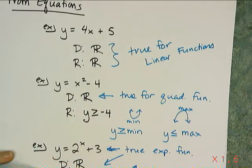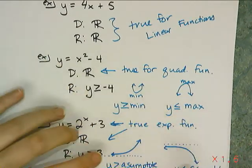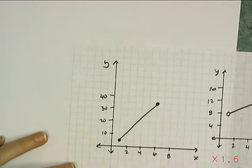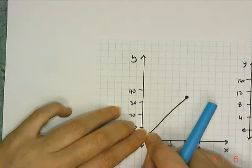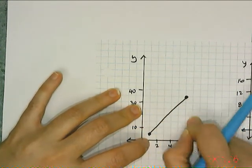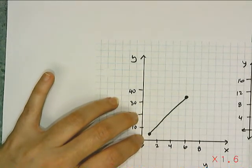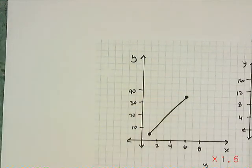Now let's look at how to find domain and range from graphs — not the infinite graphs with arrows, but pieces of graphs, like line segments. All you have to do is remember that domain covers all the x values and range covers all the y values. You look at your scale and figure out what all the x values and y values can be.